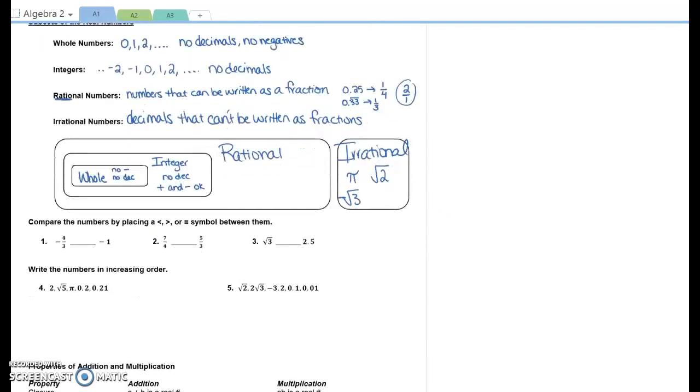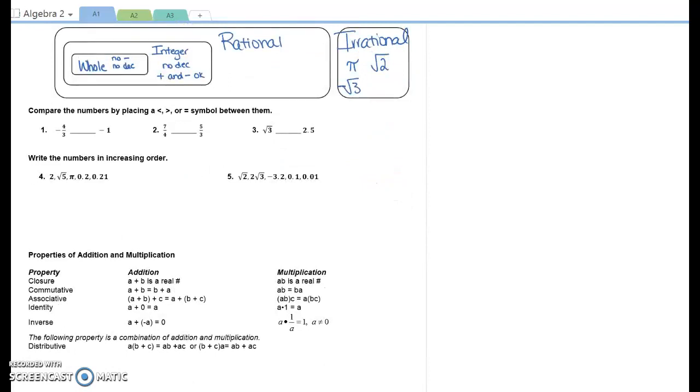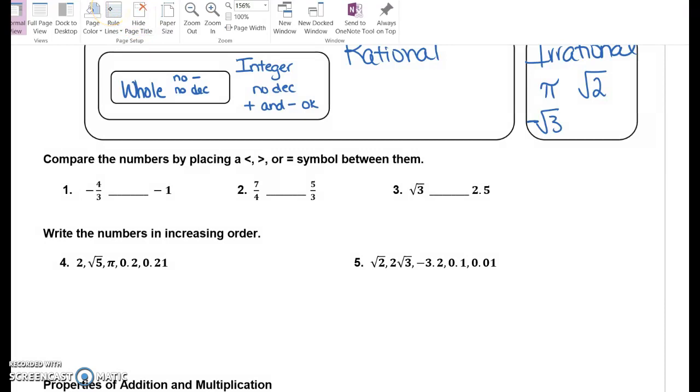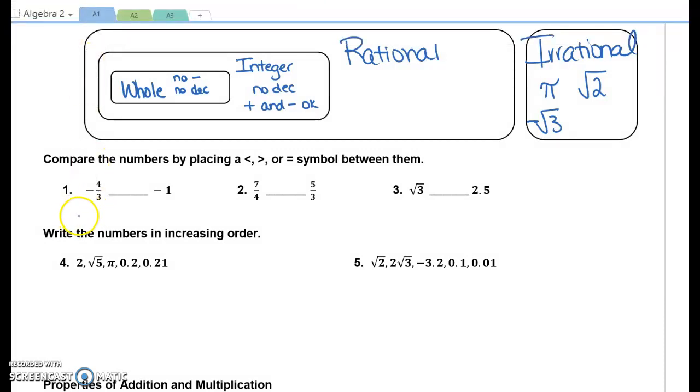Compare the numbers by placing a less than, greater than, or equal symbol between them. You may need to convert them into decimals before you can accurately compare them. So negative four thirds, that is the decimal negative 1.3 repeated. Which is bigger? Negative 1.3 repeated or negative 1? Negative 1. If you need to, think about the number line. Where would they fall on the number line? Whichever one is farthest on the right is the bigger number. So take a moment and try two and three. And I'm just going to tell you right now, four and five really annoy me. We're going to skip four. But do number five.